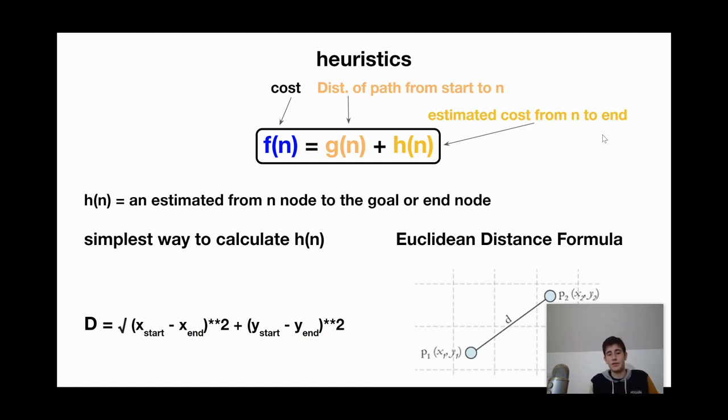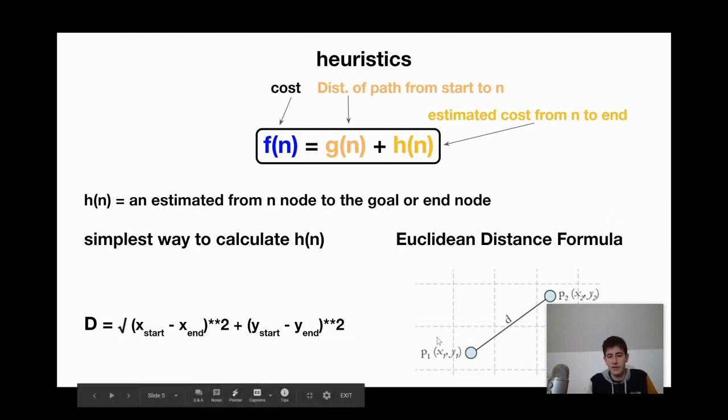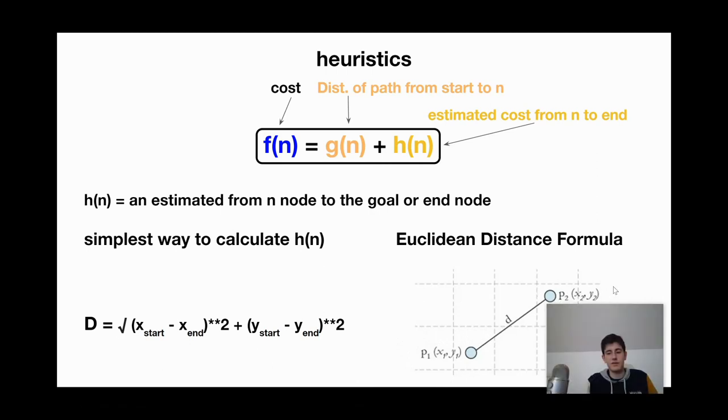H of N is an estimated value from the nth node to the goal or end node. The simplest way to calculate H of N is to use a Euclidean distance formula, which means in a 2D space, we have two points with XY values. Point 1 has XY values of X1, Y1, and point 2 has XY values of X2, Y2. Now the easiest way to calculate the distance between these two, shortest distance between these two points, is using the distance formula. So the distance formula is the square root of the X start value minus the X end value squared, plus the Y start value minus the Y end value squared.